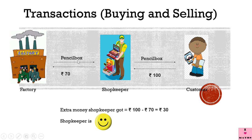The pencil box was bought by the shopkeeper for rupees 70 from the factory, and the same pencil box he sold for rupees 100. The extra money the shopkeeper got is equal to rupees 100 minus rupees 70, which equals rupees 30. So the shopkeeper is again happy.